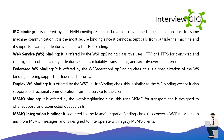WS binding is offered by the WSHttpBinding class. It uses HTTP or HTTPS for transport and is designed to offer reliability, transactions, and security over the internet. Federated WS binding is offered by the WSFederationHttpBinding class — a specialization of the WS binding offering support for federated security. Duplex WS binding is offered by the WSDualHttpBinding class, similar to WS binding but also supports bi-directional communication from the service to the client. MSMQ binding is offered by the NetMsmqBinding class, using MSMQ for transport and designed for disconnected queued calls. MSMQ integration binding is offered by the MsmqIntegrationBinding class, converting WCF messages to and from MSMQ messages to interoperate with legacy MSMQ clients.